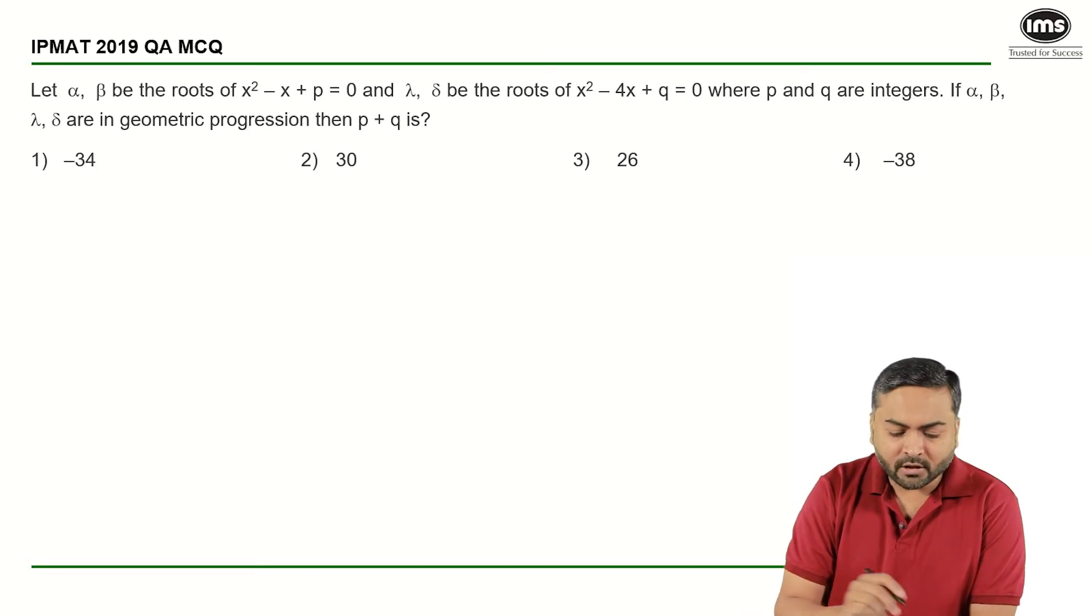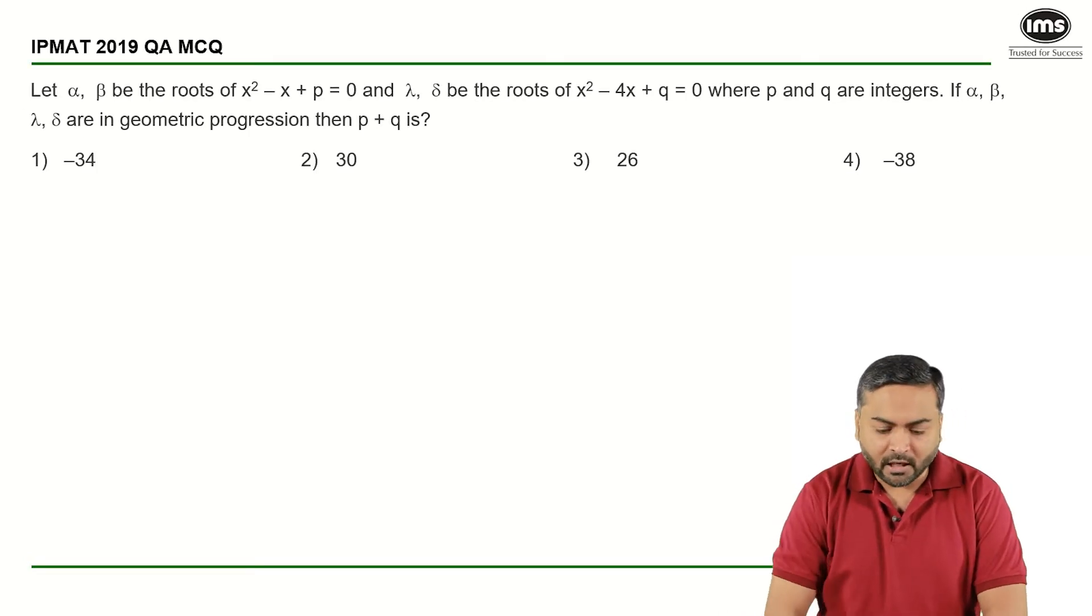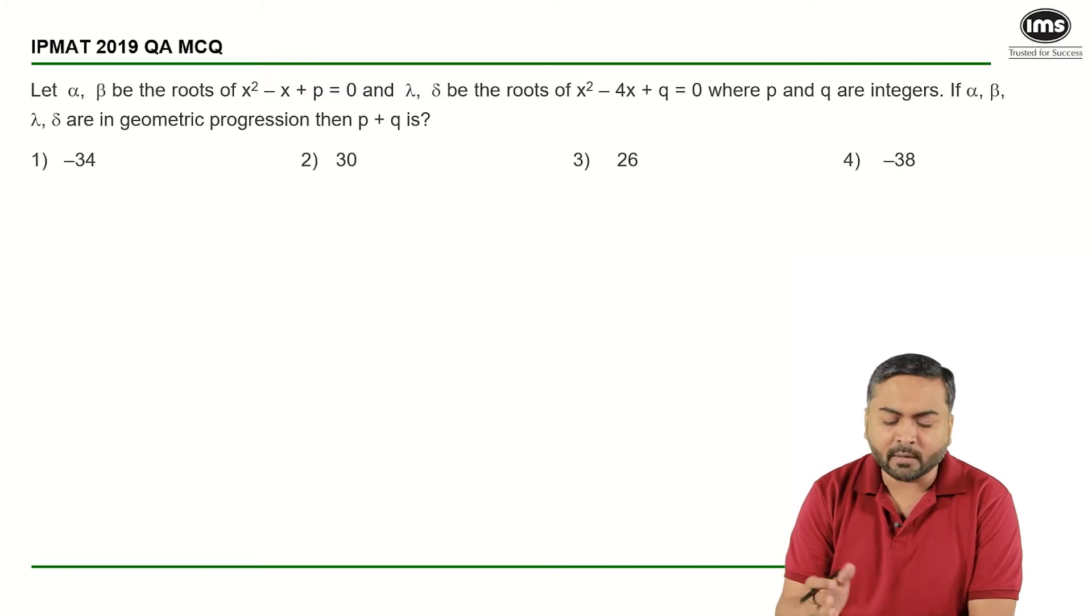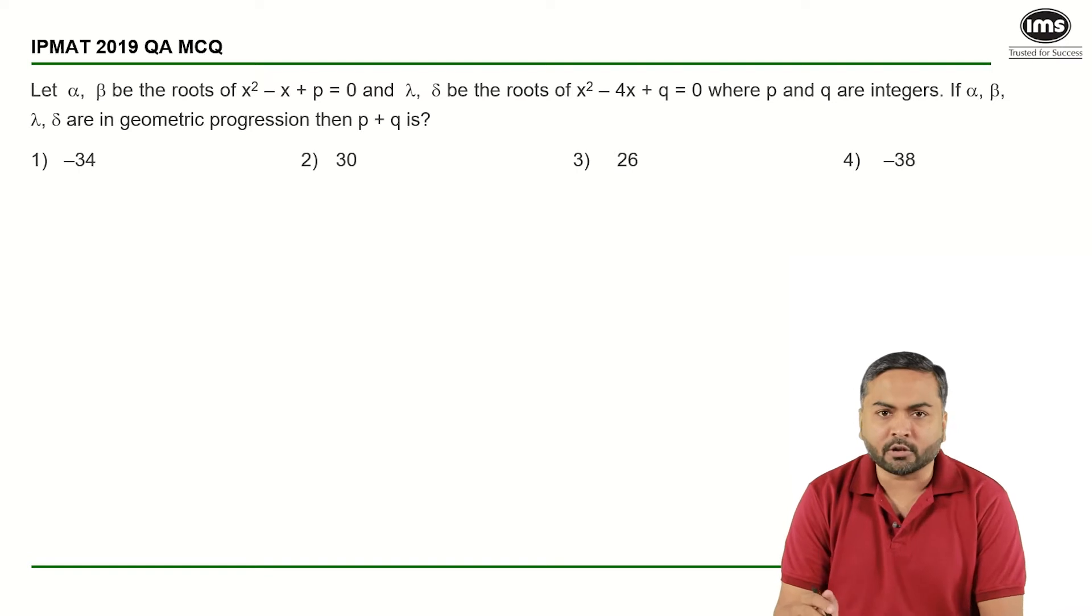There is a quadratic equation given. Let alpha and beta be the roots of one equation and gamma and delta be the roots of another quadratic equation. It is said that all four roots are in geometric progression. You need to find the value of P plus Q.